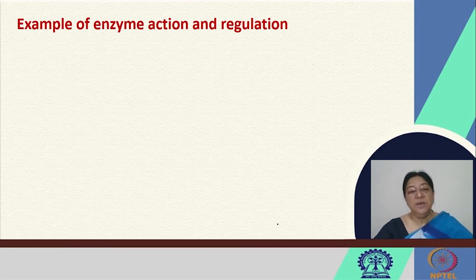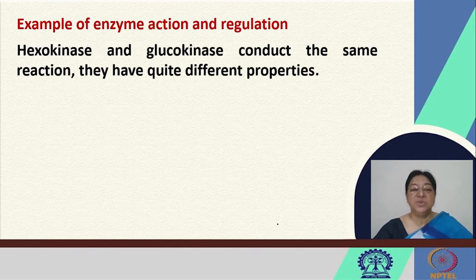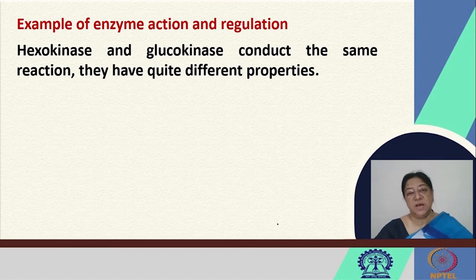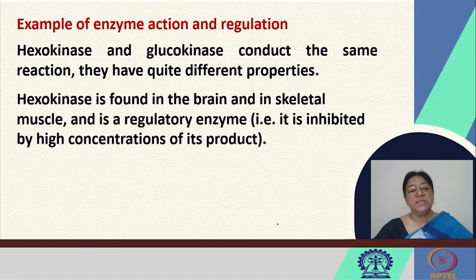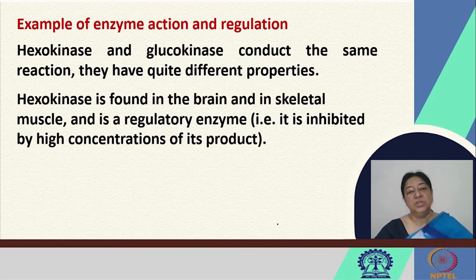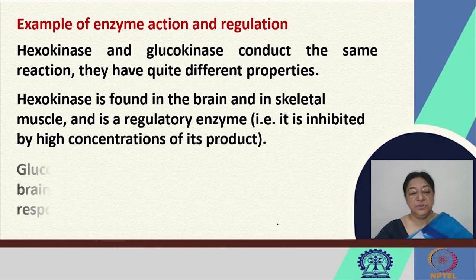a very beautiful example is that of hexokinase and glucokinase. They conduct the same reaction, but their properties are different. Hexokinase, for example, is found in the brain and in skeletal muscle and is a regulatory enzyme — this enzyme is inhibited by high concentrations of its product, like we saw in feedback inhibition.